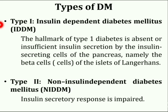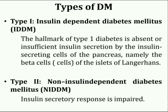Diabetes can be classified into two types: type 1 or type 2. Type 1 diabetes is also referred to as insulin dependent diabetes mellitus, or sometimes juvenile onset diabetes mellitus, meaning diabetes that develops in children or young adults, although onset can also occur in adults. In type 1 diabetes, the insulin secreting cells of the pancreas — namely the beta cells of the Islets of Langerhans — do not produce or produce insufficient insulin.